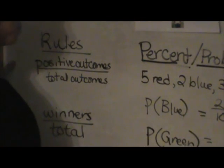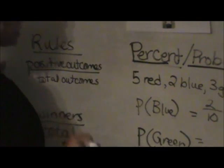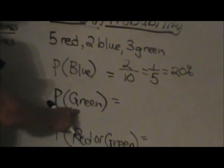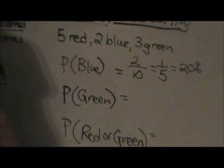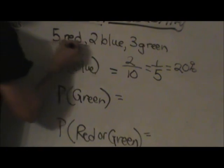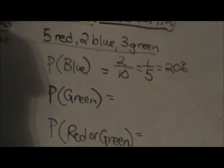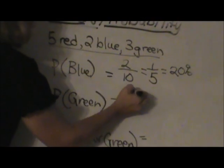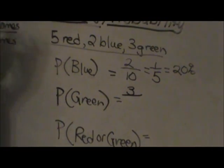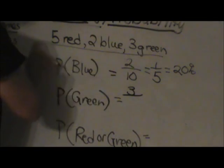So let's look at a couple more examples and we'll slow it down just a little bit. Okay, what's the probability that I will draw a green marble? Well, let's look at our information up here. We have three green marbles. So three are my winners or my positive outcomes. Out of how many total?